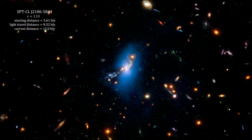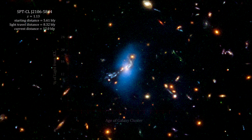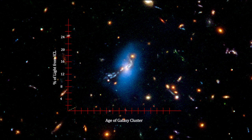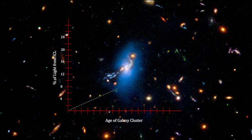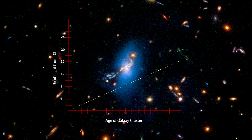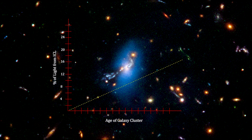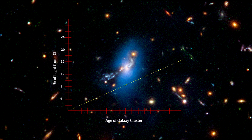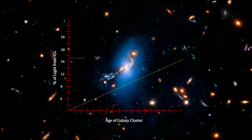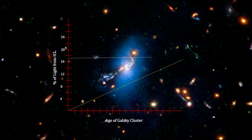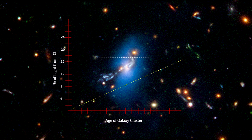Here's a second galaxy out of the ten studied for this project. If the first theory is correct, we would expect the percentage of light generated by intergalactic stars to grow over time, as more and more of the stars are produced. But this Hubble survey shows that intergalactic light accounts for around 17% of a cluster's light, no matter how old the cluster is.